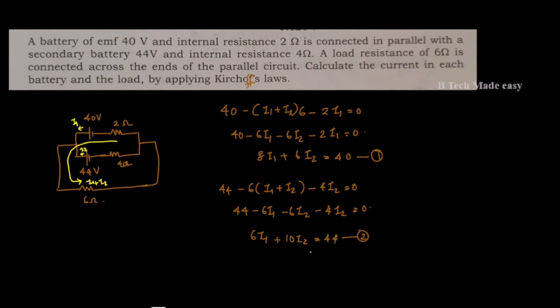Solving equations 1 and 2 simultaneously: I1 equals 3.1 A and I2 equals 2.54 A. These are the currents in each battery.